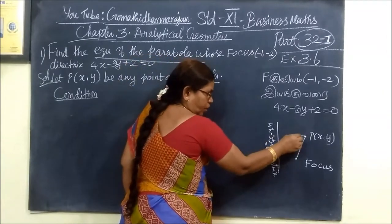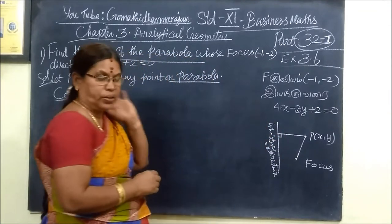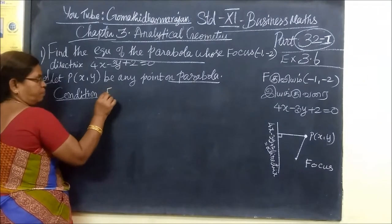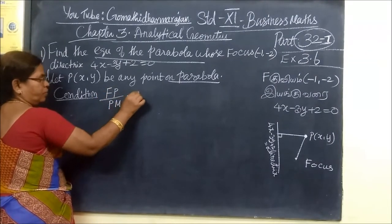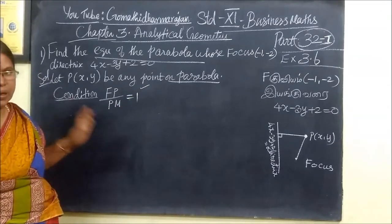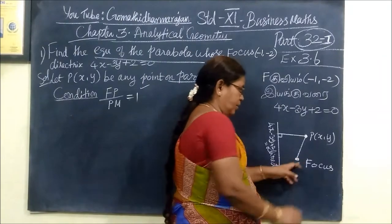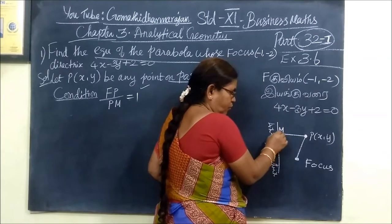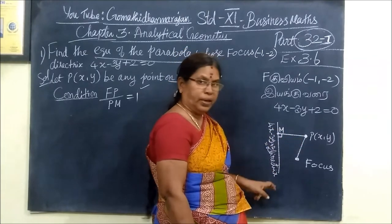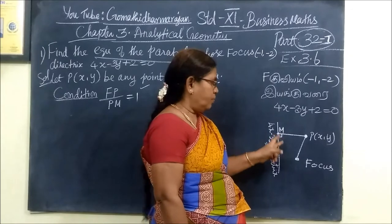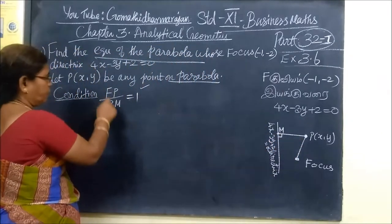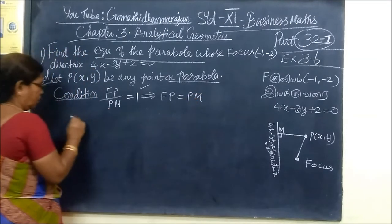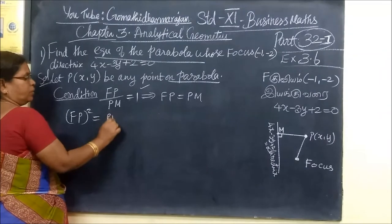From here you will draw a parabola. This is the condition: P equal to 1. FB by PM equal to 1, where F is the focus, P is the point, and M is the foot of the perpendicular from the point to the directrix — the perpendicular distance. So we apply FB equal to PM, or FB squared equal to PM squared.